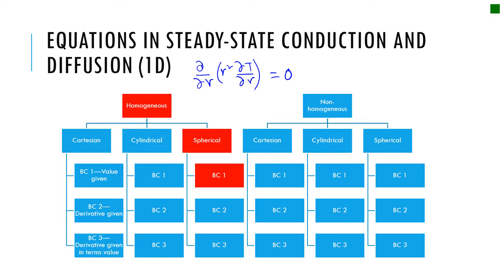And notice this is homogeneous because the right-hand side is equal to zero and it's in spherical coordinate and we're going to also solve this for the two simple boundary conditions of the dependent variable given for two different positions of R.